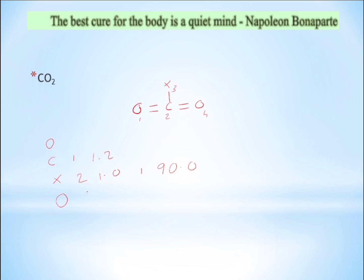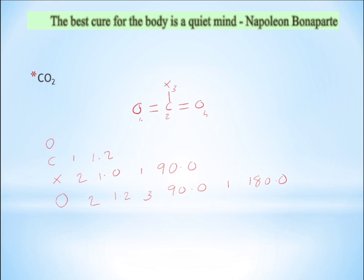The fourth line represents the second oxygen, connected to carbon with bond length 1.2 Å and bond angle 90.0 degrees. Then the dihedral angle: we represent the dummy atom and the oxygen. Oxygen number 1 connectivity, dihedral angle 180.0 degrees. This completes the carbon dioxide Z-matrix.